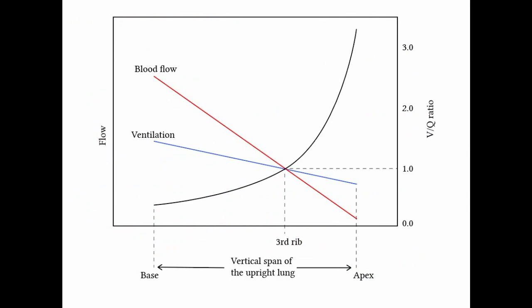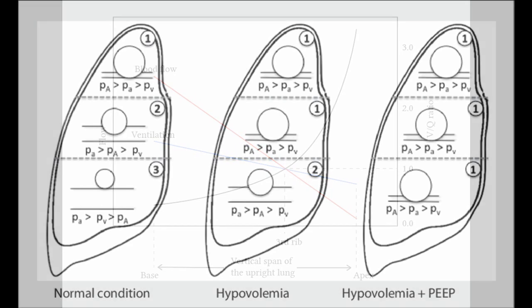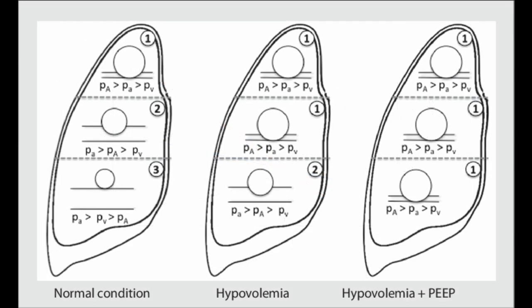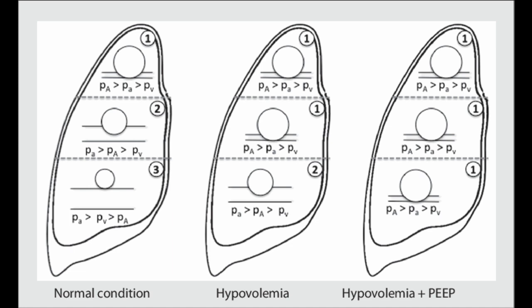Zone one does not normally exist in healthy lung except a bit at the apices. But if you're overzealous with the ventilator you can artificially inflate alveoli too much and create zone one. The other way that zone one is normally created is in the case of haemorrhage, where the lung is under-perfused and therefore the alveoli are over-inflated relatively.